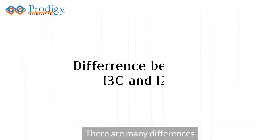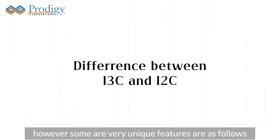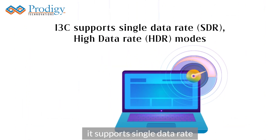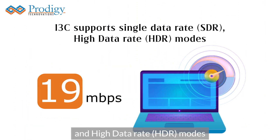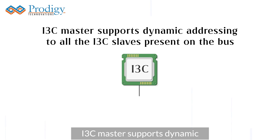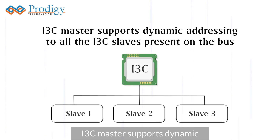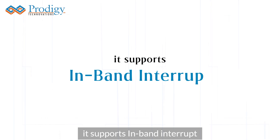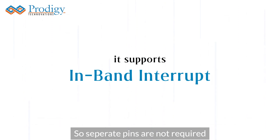There are many differences; however, some very unique features are as follows. It supports single data rate and high data rate modes. I3C master supports dynamic addressing to all the I3C slaves present on the bus. It supports in-band interrupt on the bus, so separate pins are not required.